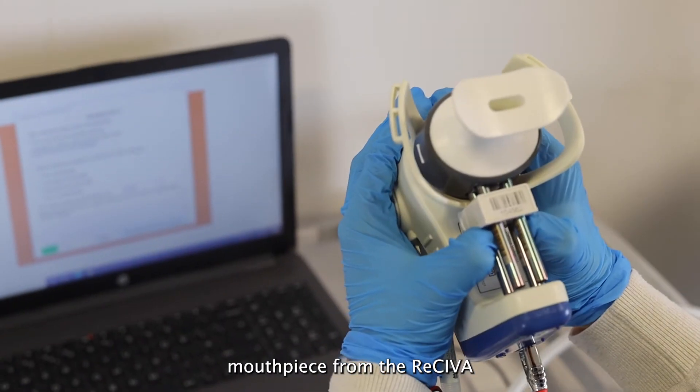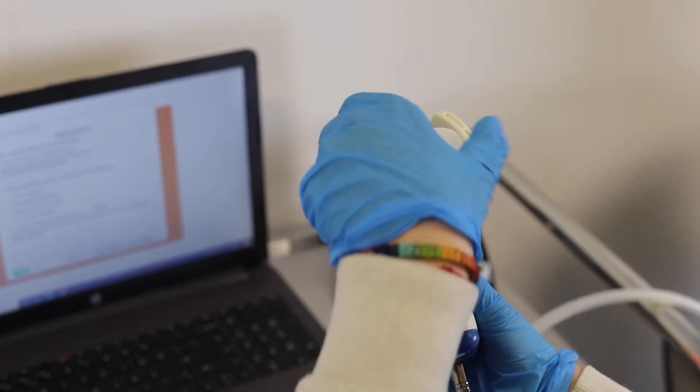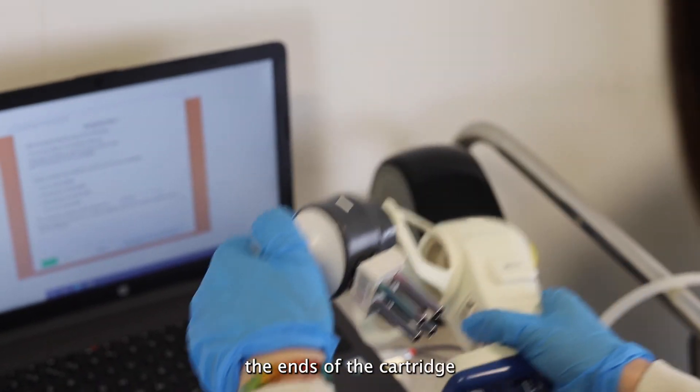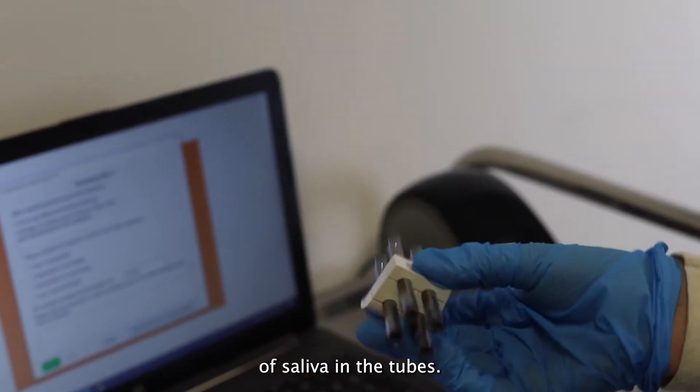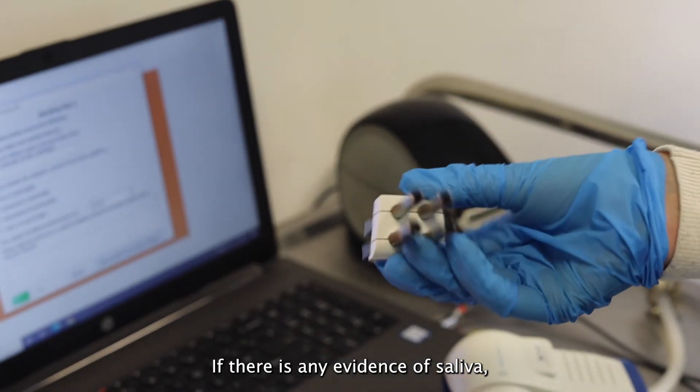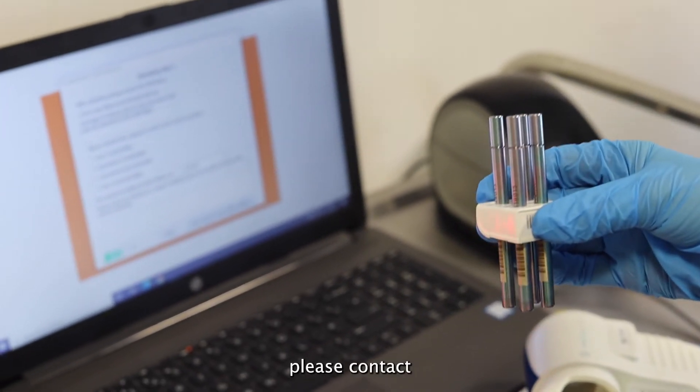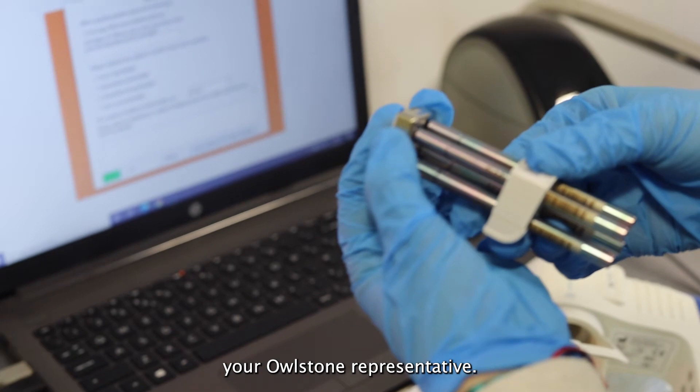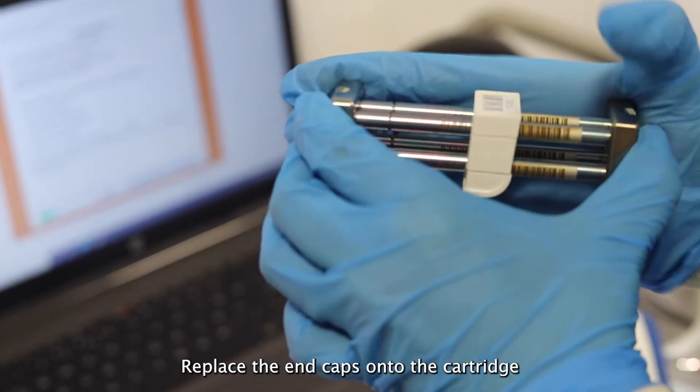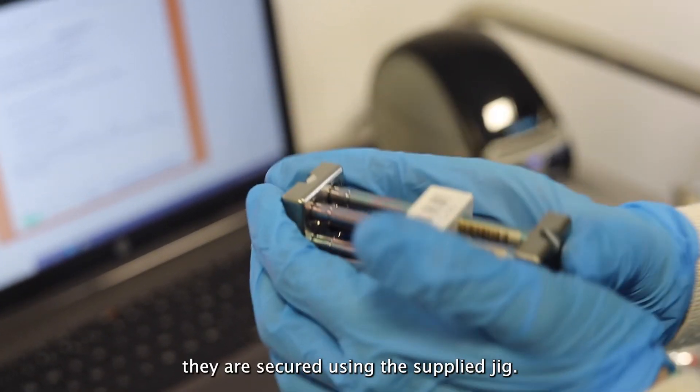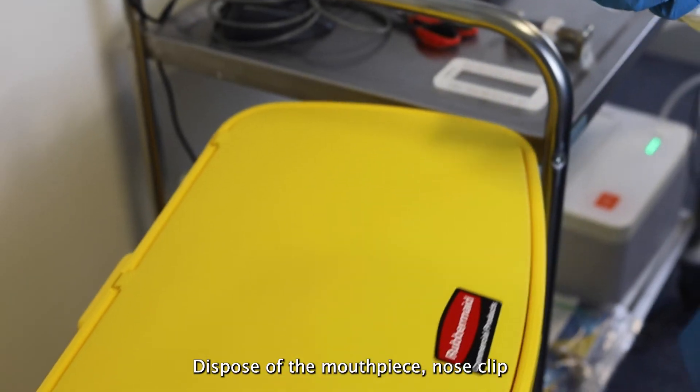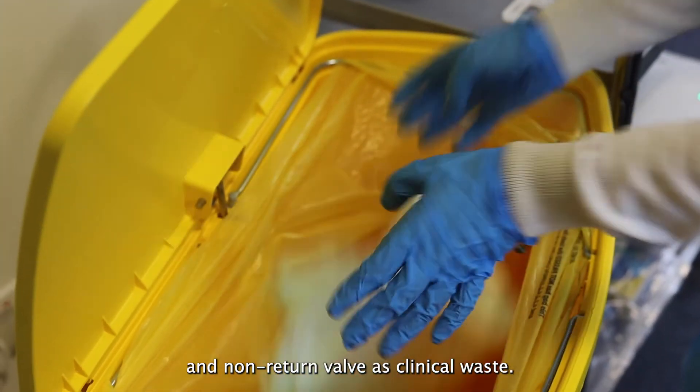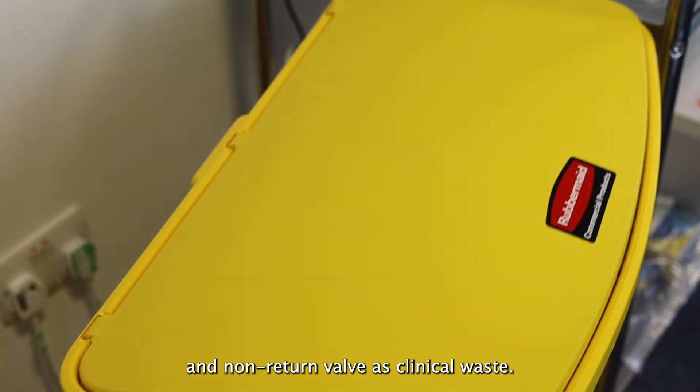Remove the cartridge and mouthpiece from the receiver and visually inspect the ends of the cartridge to see if there's evidence of saliva in the tubes. If there is any evidence of saliva, please contact your Owlstone representative. Replace the end caps onto the cartridge and check they are secured using the supplied jig. Dispose of the mouthpiece, nose clip, and non-return valve as clinical waste.